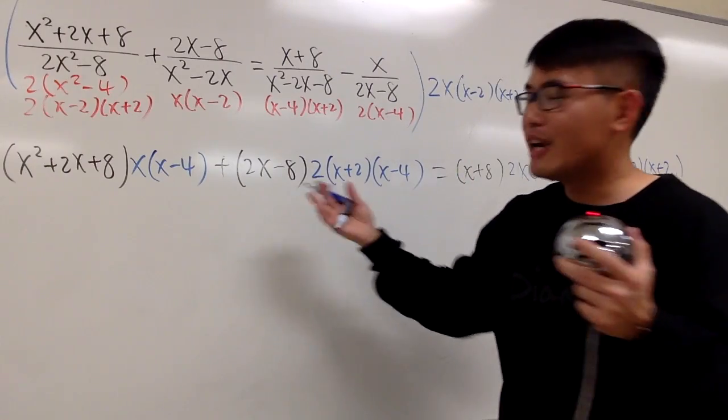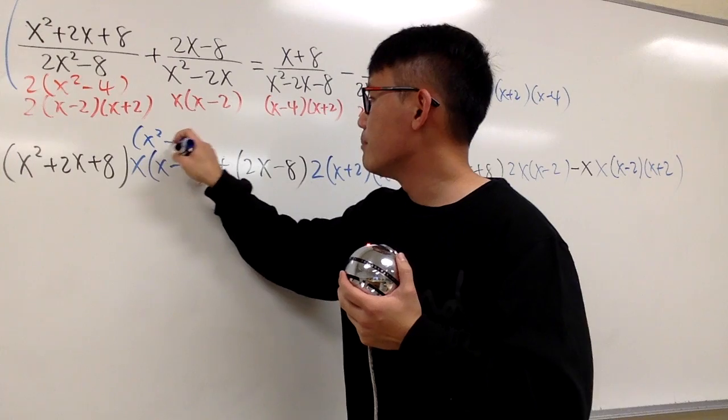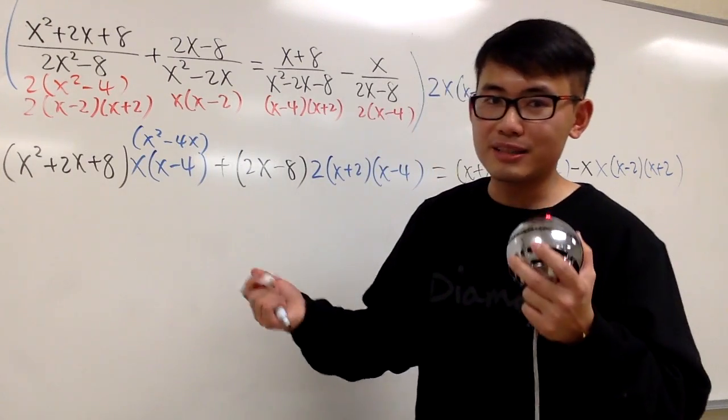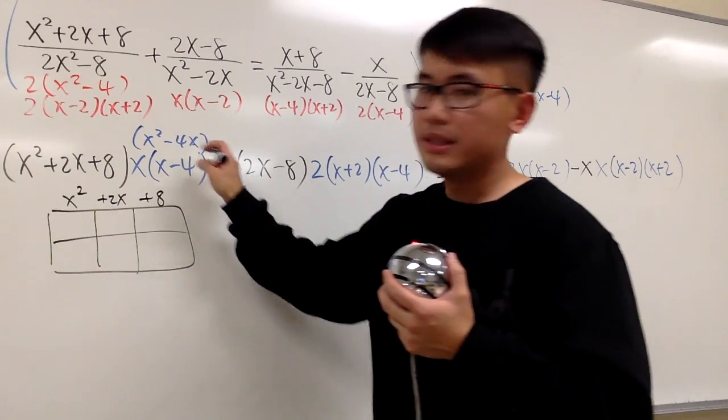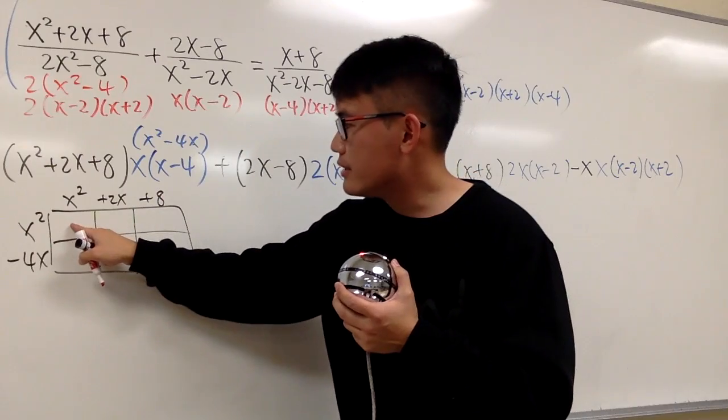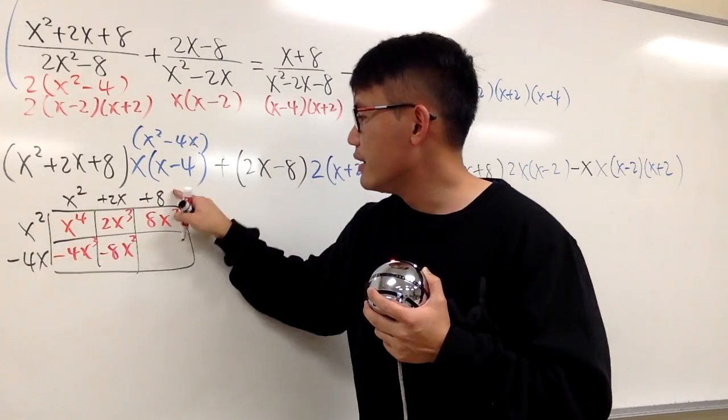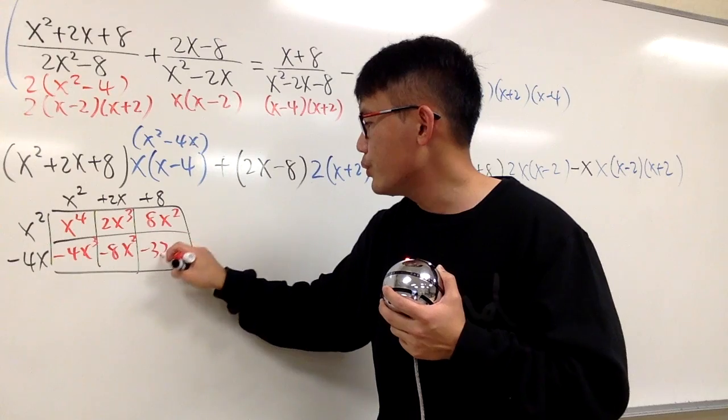To multiply each every term out, x times x minus 4, we get x squared minus 4x. 3 term times 2 term, just use the box method. This is on the top, and let me put this on the side right here. This is going to be x squared times x squared. And this times that, this times that, x squared times this. This times that, this times that is negative 32x.